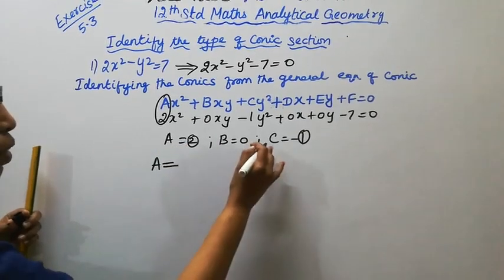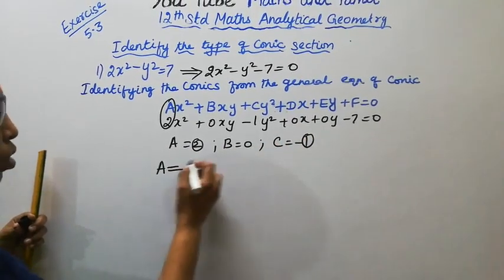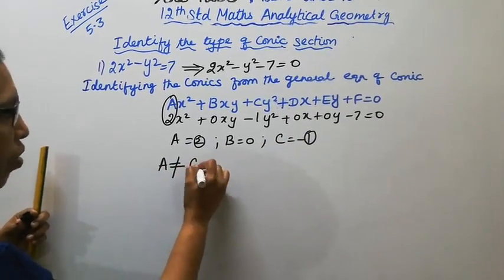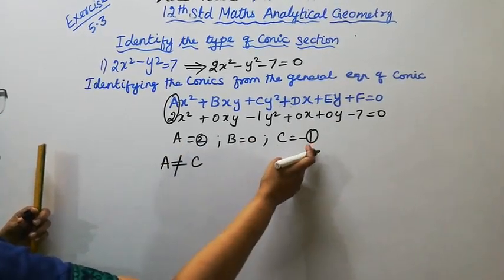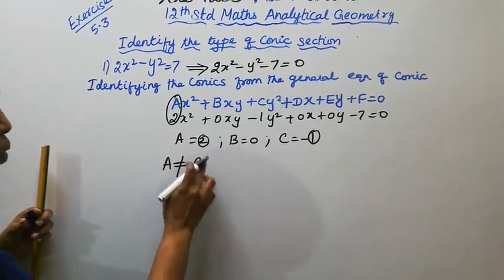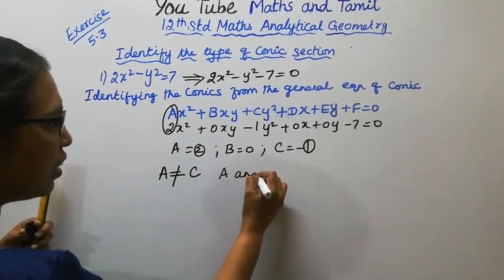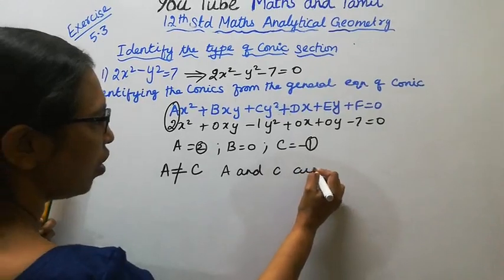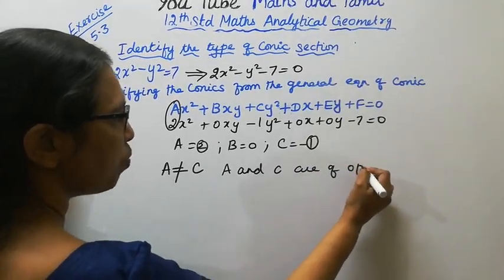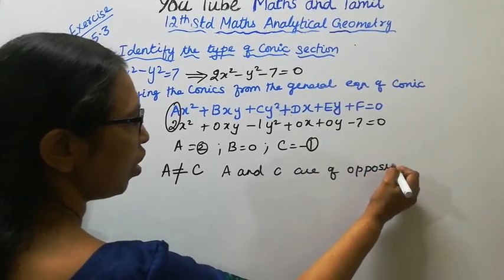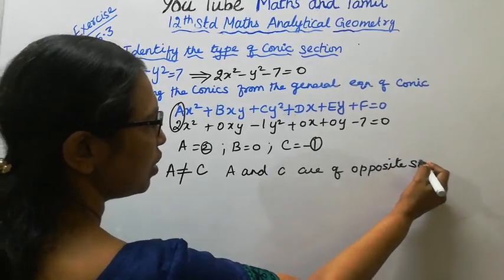A = 2, B = 0, C = -1. A does not equal to C. 2 does not equal -1. A and C are of opposite sign.